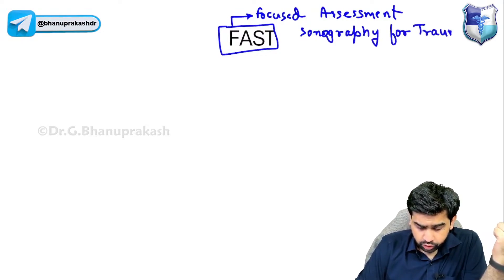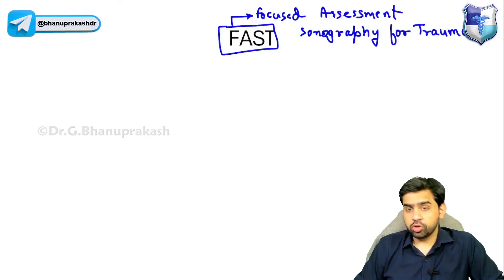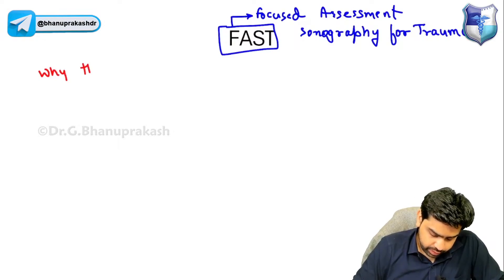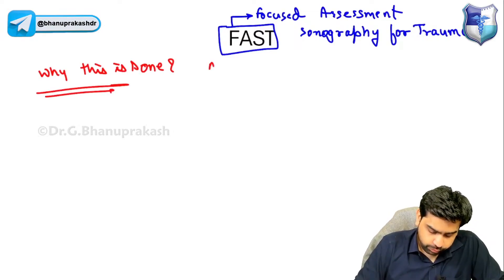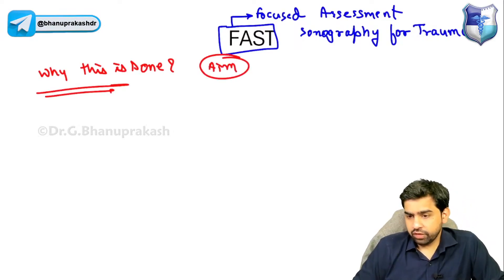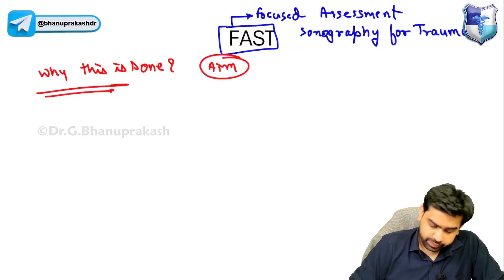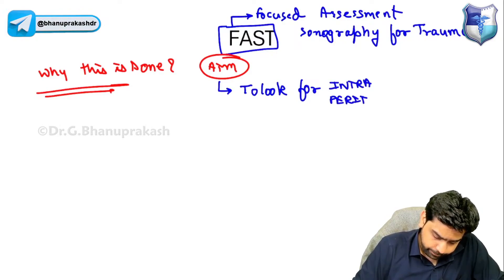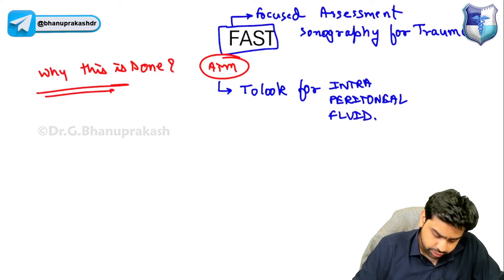So FAST stands for Focused Assessment Sonography for Trauma. Now let's understand why this is needed. The aim of performing this particular FAST is to look for intraperitoneal fluid.